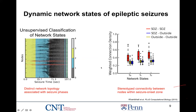Quick question: how big was the grid inserted for this dataset? It varies by patient, but on average we had a range between 80 to 120 electrodes.